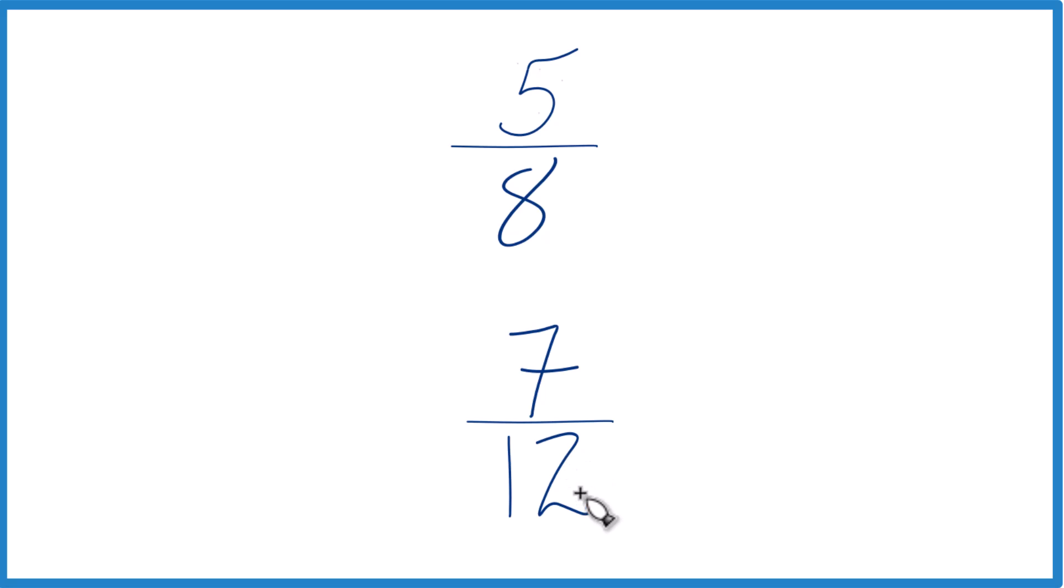The other way to do it is find a common factor, something that both 8 and 12 go into evenly, so we can get the same denominator and just compare the numerators. Let's do that. 8 goes into 24 three times, and 12 goes into 24 two times.